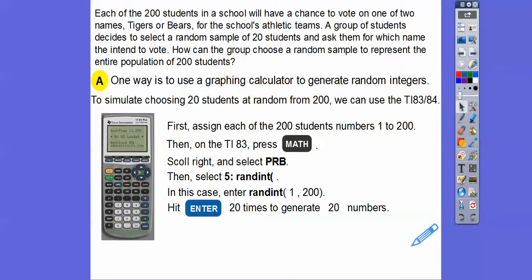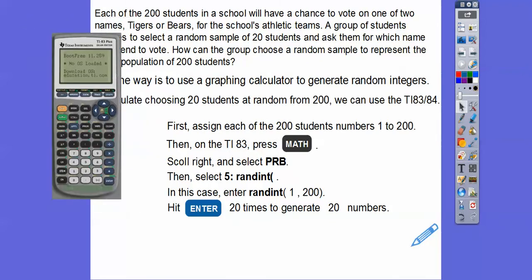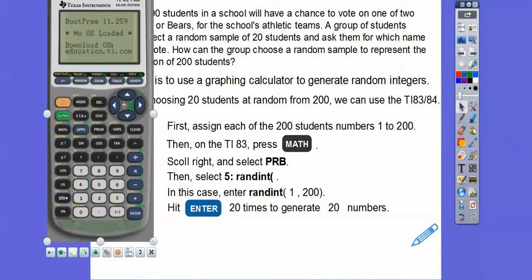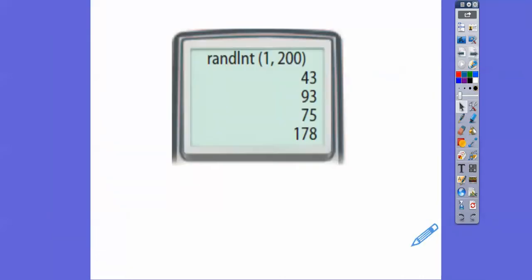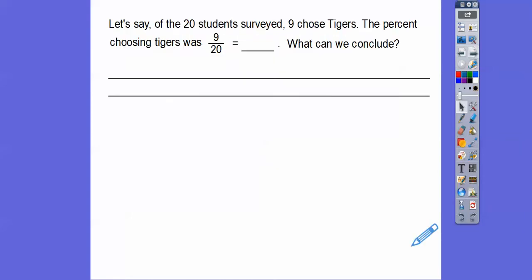So now we're going to hit the enter button and the enter button is right here. It's down at the bottom right there. So we're going to hit this enter button 20 times and that's going to generate 20 different random numbers. Here's the first four right there. So when we do that, let's just pretend that of those 20 students that we picked and we surveyed that nine chose tigers. So the percent that chose the tigers was nine out of those 20 students.